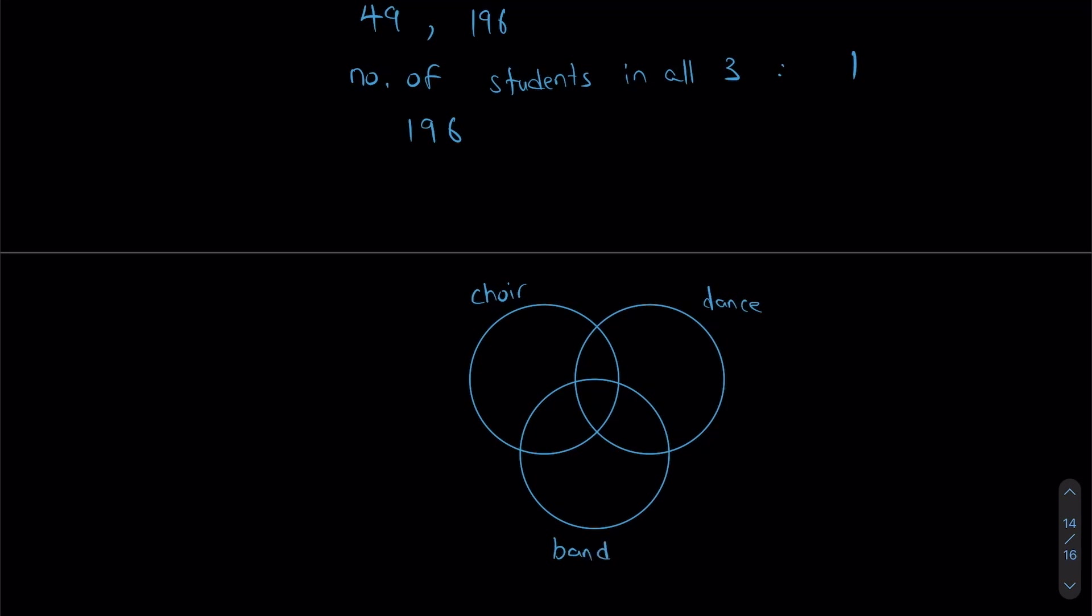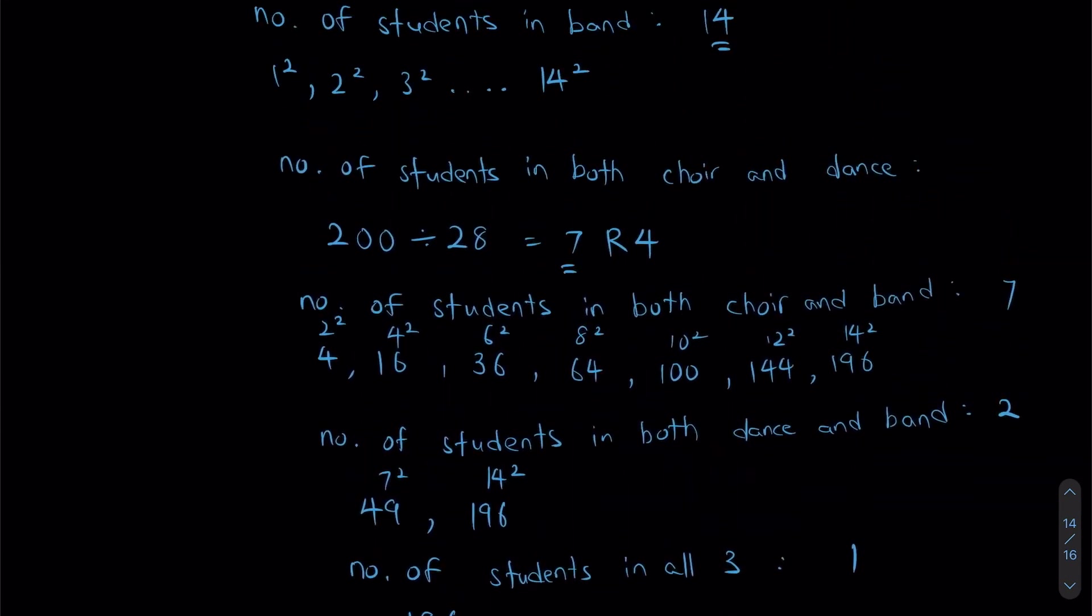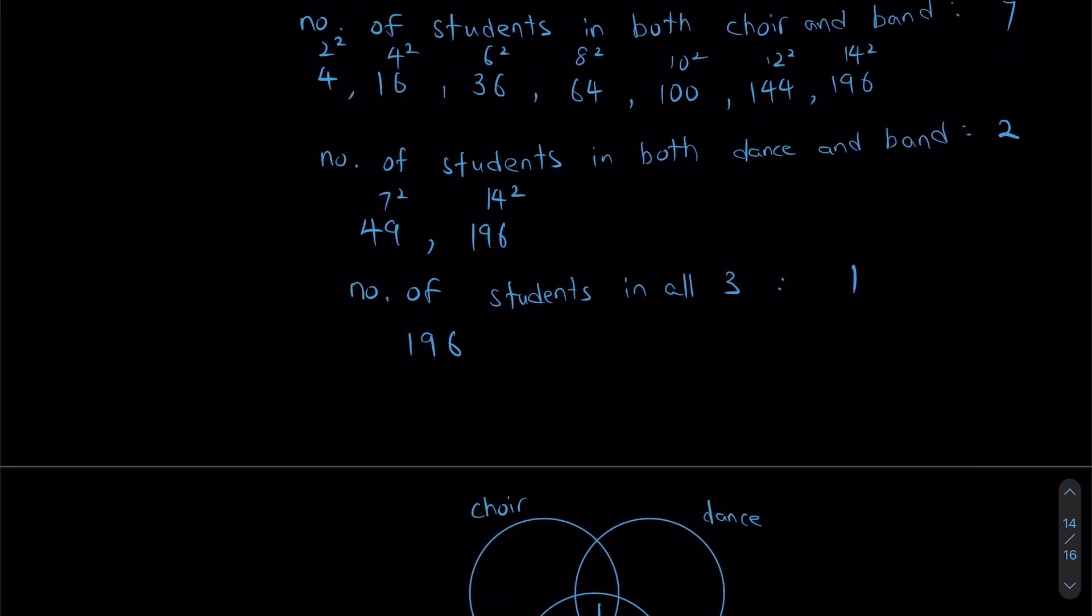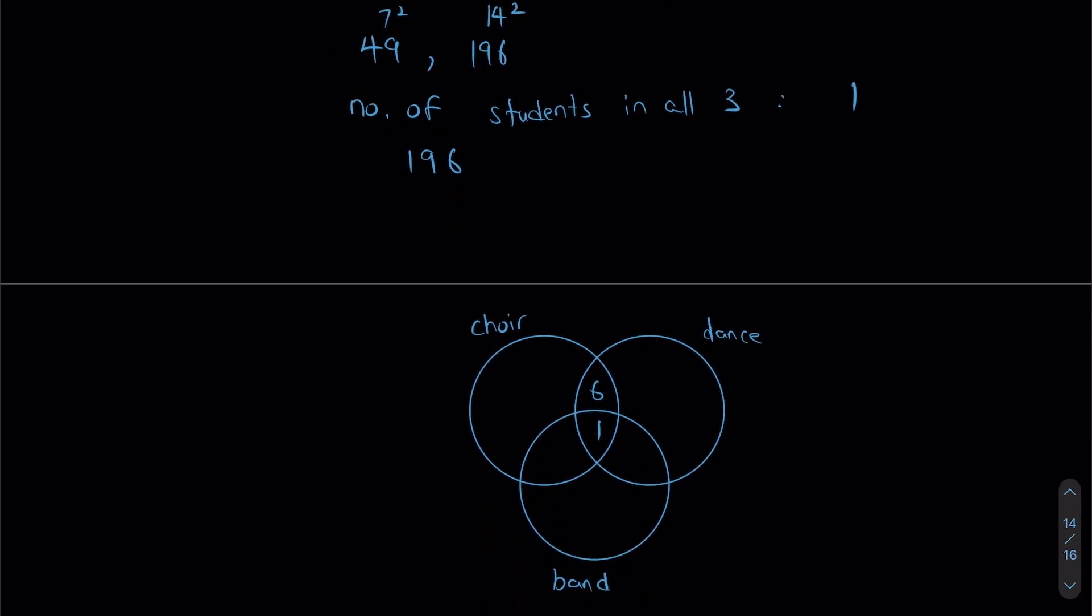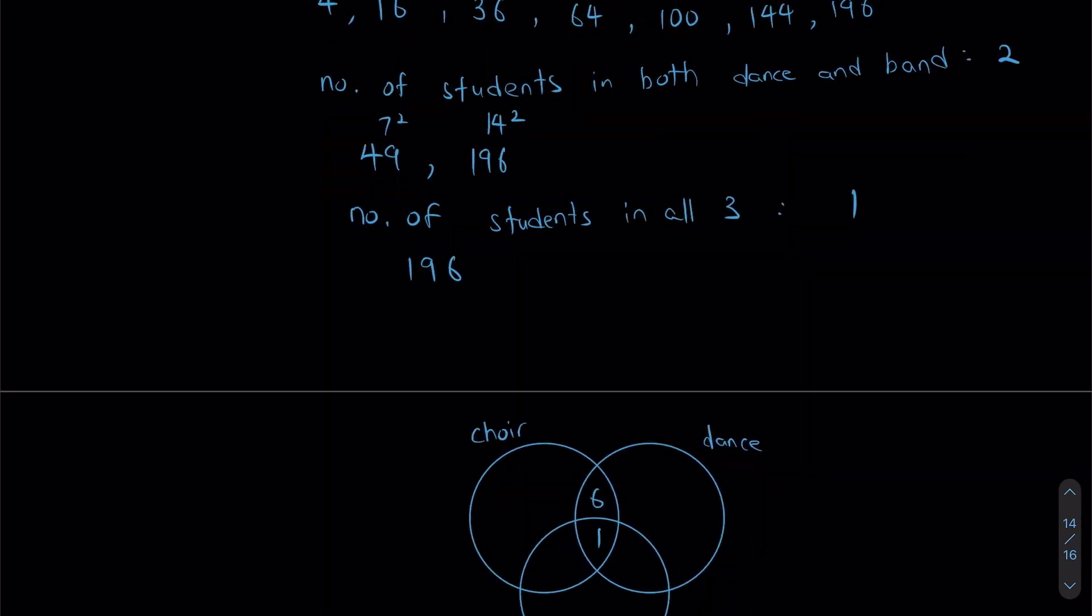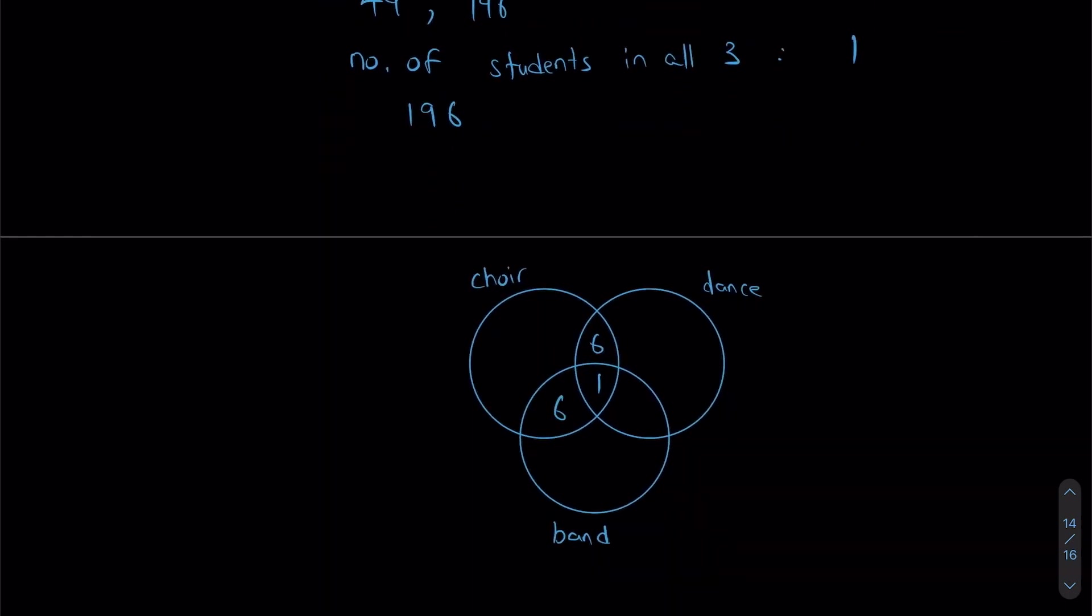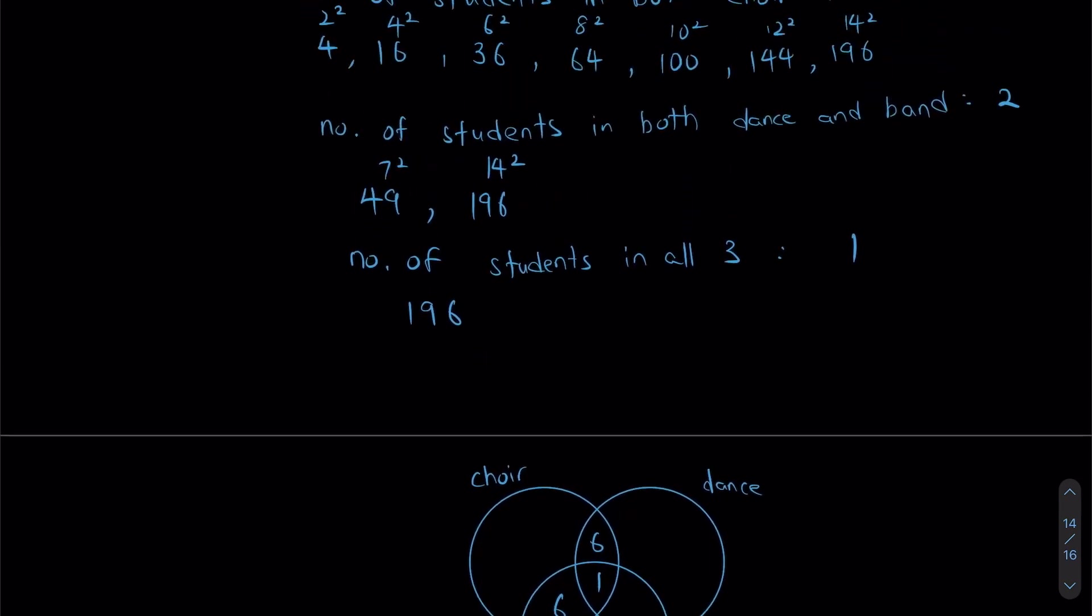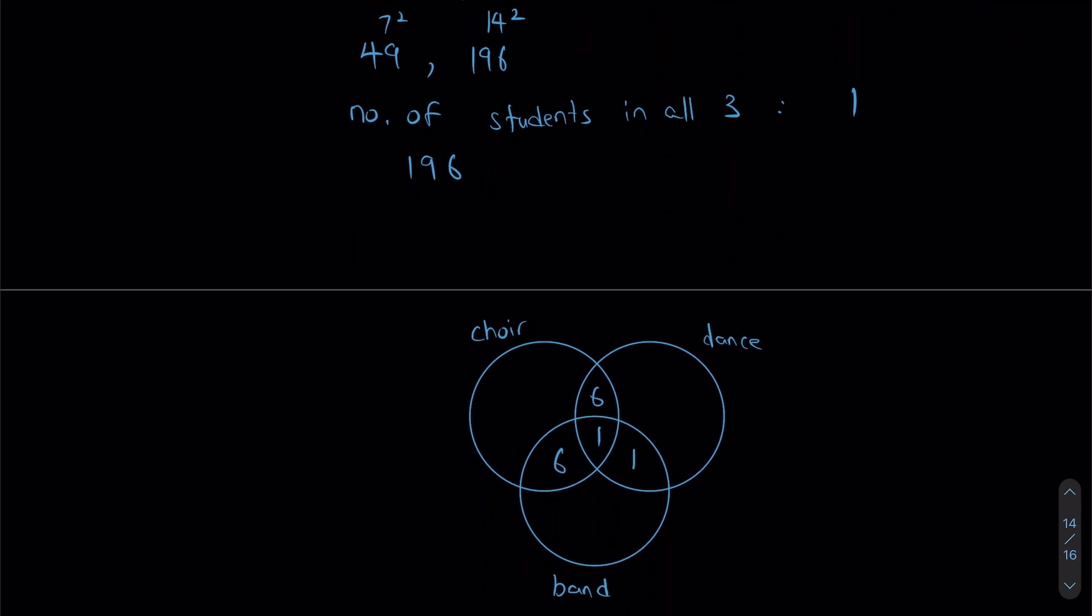So, as you can see the middle section, the one where all 3 circles overlap, is the 1 student that takes all 3. Now, let's look at the overlap between choir and dance. Choir and dance, there's overlap of 7. But that 7 also includes the 1 extra student right in the middle. So, 7 minus 1, that's going to be 6. Now, we look at the overlap between choir and band. Same thing, we're going to have to take 7 minus 1 because of that one kid in the middle. 6 again. For the last overlap, we're going to be having 2 minus 1. And that's going to be 1.